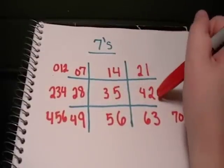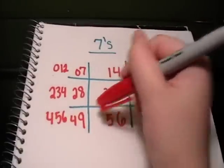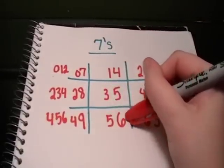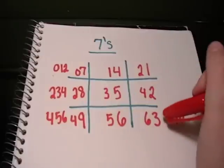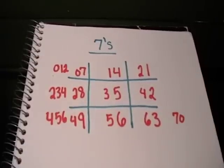six times seven is 42, seven times seven is 49, eight times seven is 56, nine times seven is 63, and ten times seven is 70.